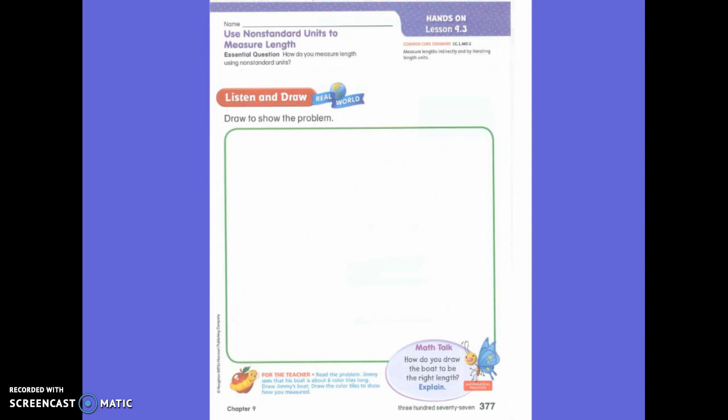So Jimmy sees that his boat is about six color tiles long. Draw Jimmy's boat, draw the colored tiles to show how you measure. So how long was this boat? Six colored tiles long.